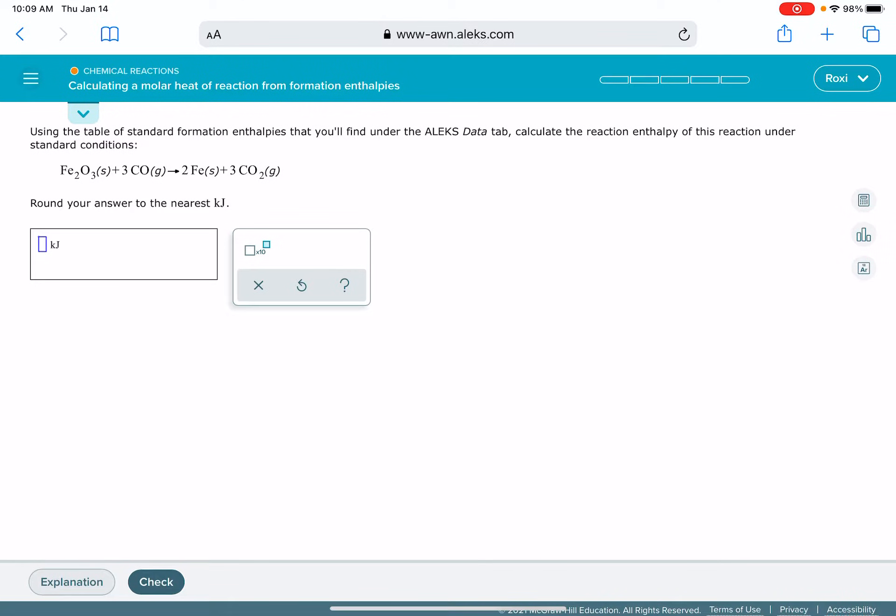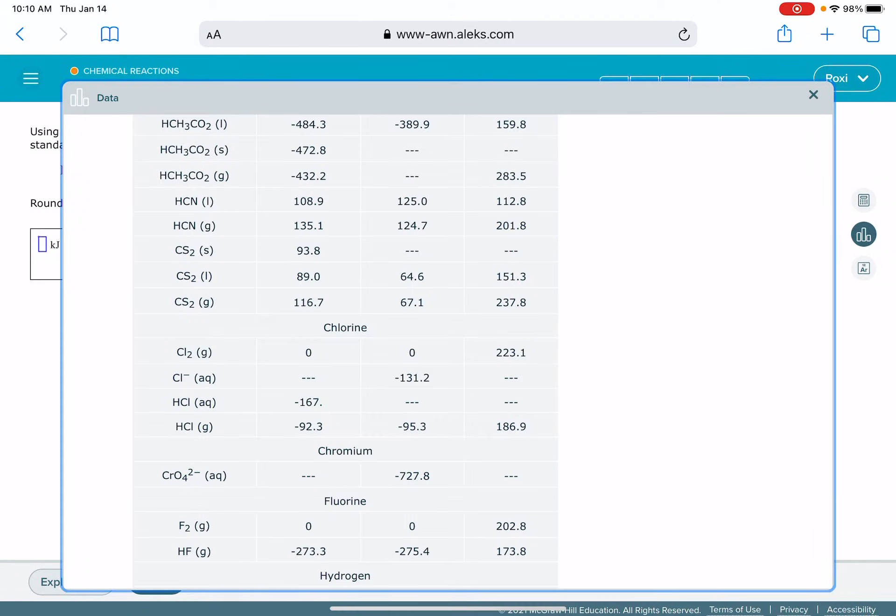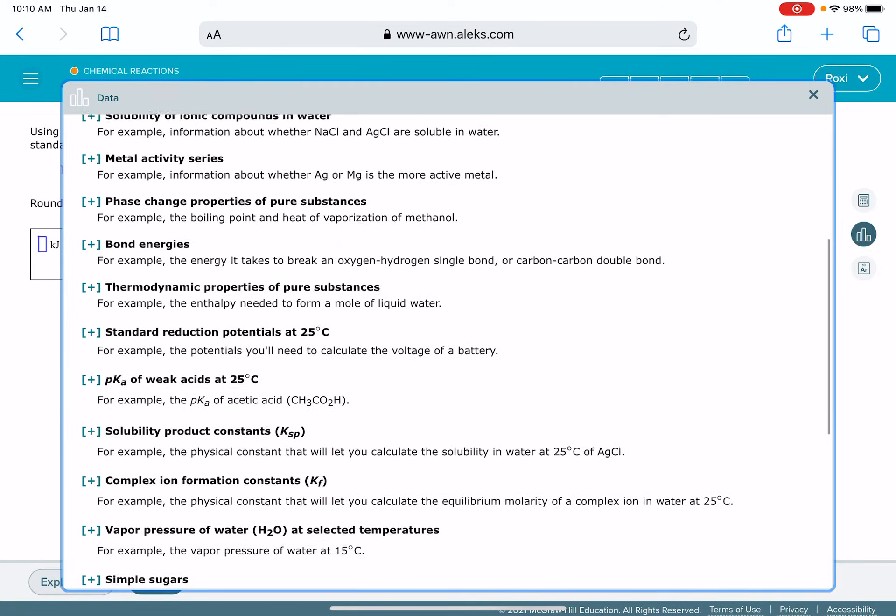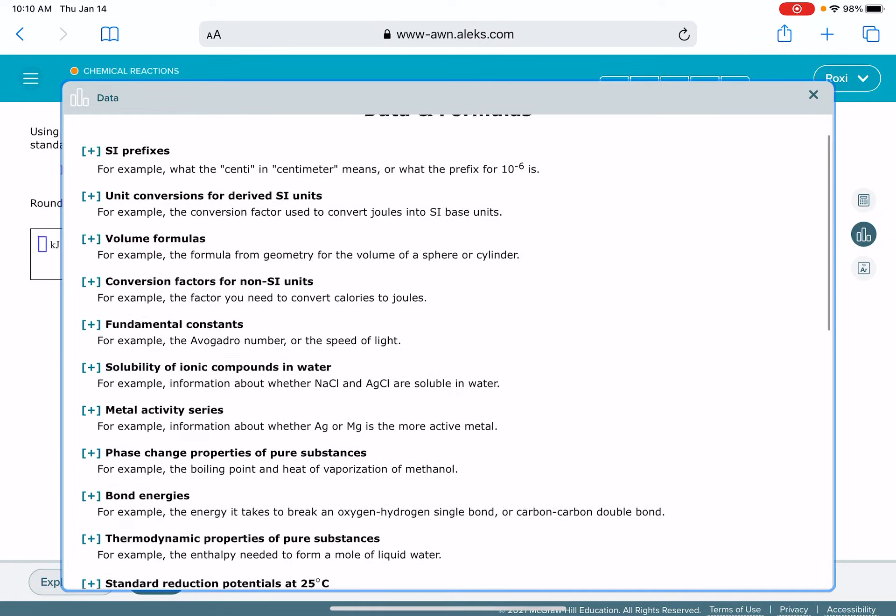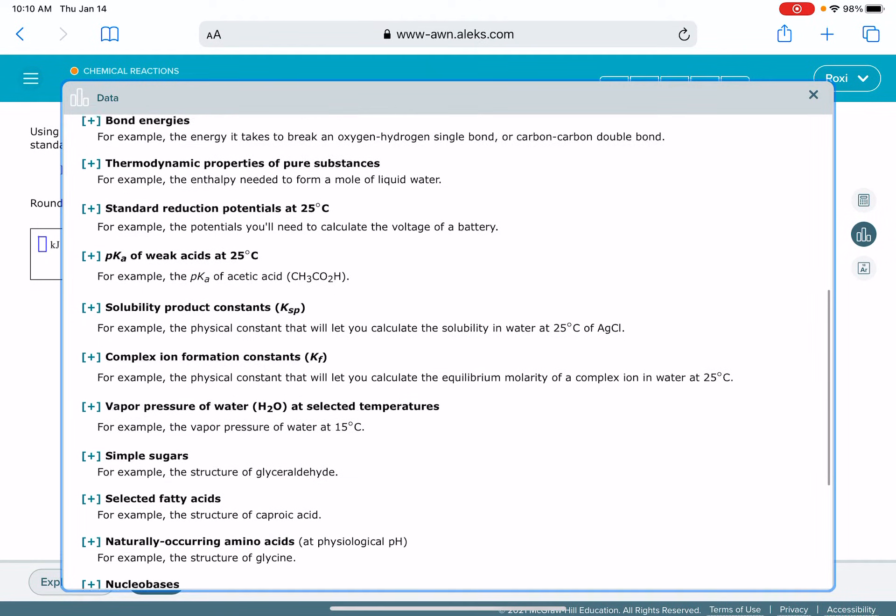The delta H of formation values can be found in the ALEKS data tab. This is this little circle over on the right hand side that looks like a little bar graph. If you click on this data tab, there's a lot of different tables you could access here. The table that you're looking for right now is at the very bottom. It's called thermodynamic properties of pure substances.